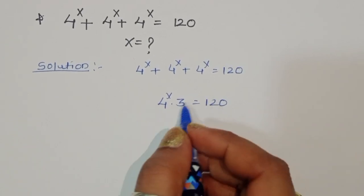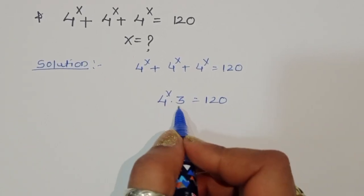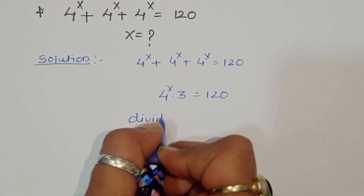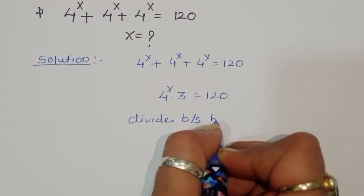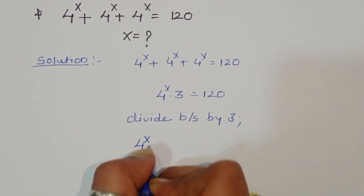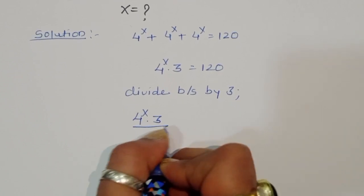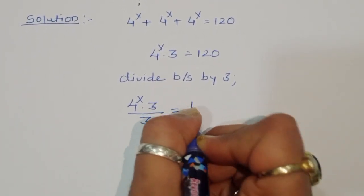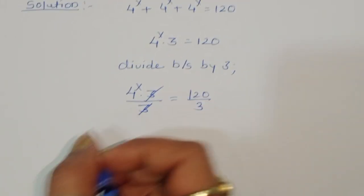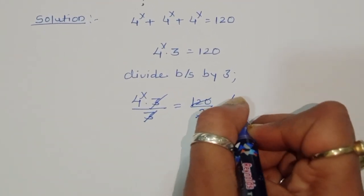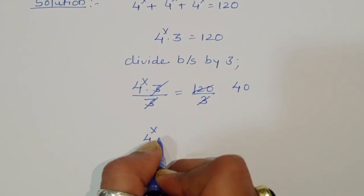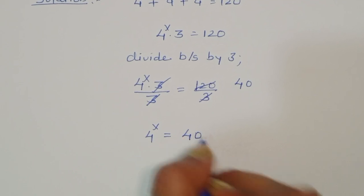Now we have to cancel the 3, so we can divide both sides by 3. Then we get 4 power x times 3 divided by 3 is equal to 120 divided by 3. The 3 cancels, and 120 divided by 3 is 40. So 4 power x is equal to 40.